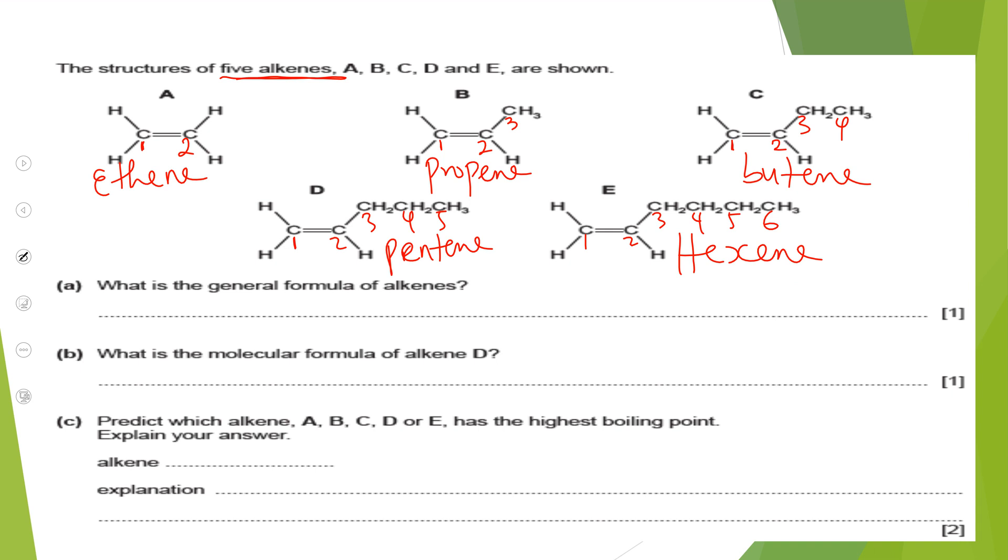We'll try to get the specific areas of these questions. The first question here is general formula. Our next question will be on molecular formula. Then, the last question in this first part is to identify or to predict boiling point. What to make an alkene of the highest boiling point. Let's go with the first question.